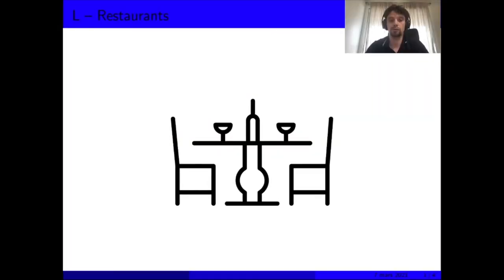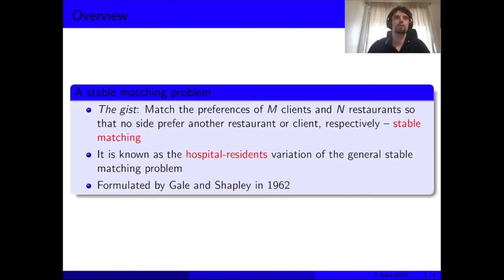I will present the solution to problem L, restaurants. The gist of this problem is that it's linked to the stable matching problem, where you want to match the preferences of M clients over N restaurants. The condition for stable matching is that neither a client prefers another restaurant, nor a restaurant prefers another client.